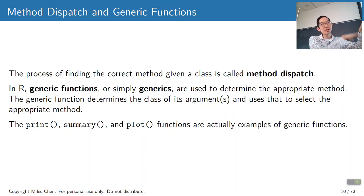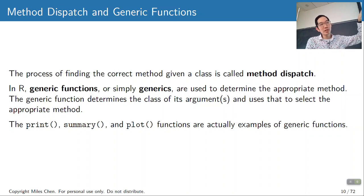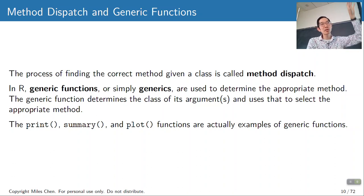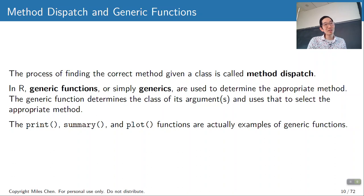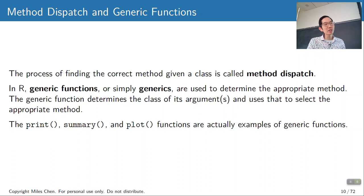A data frame is internally stored as a list, but when you ask R to print it, it prints in table form. R has to dispatch the correct code — internally it says: you gave me a data frame, so run this code for print; you gave me a regular list, run this code; you gave me a linear model object, run this code. Same with summary and plot.